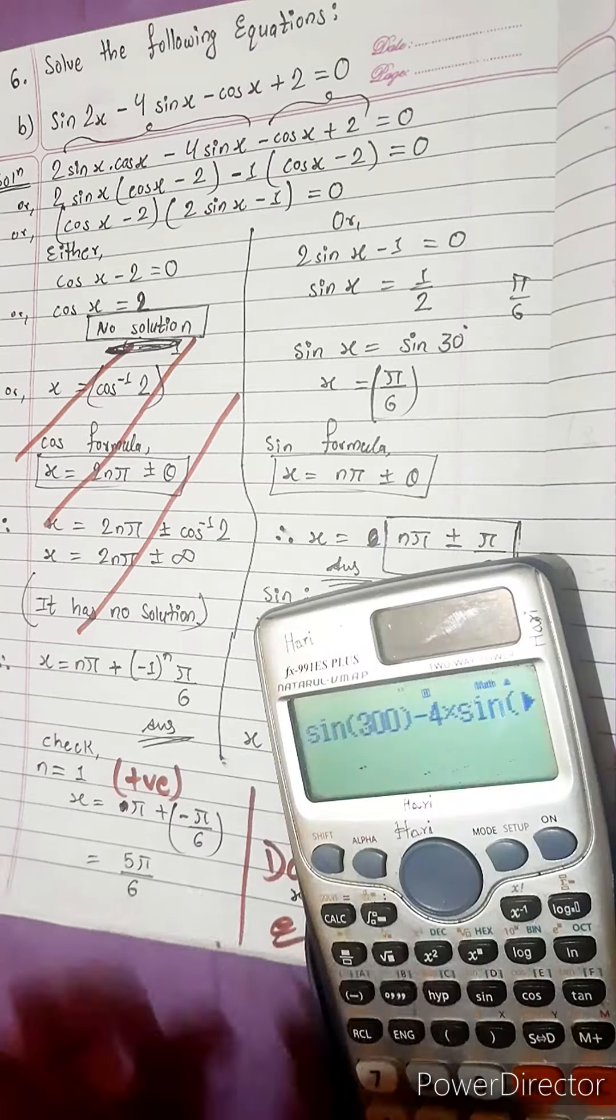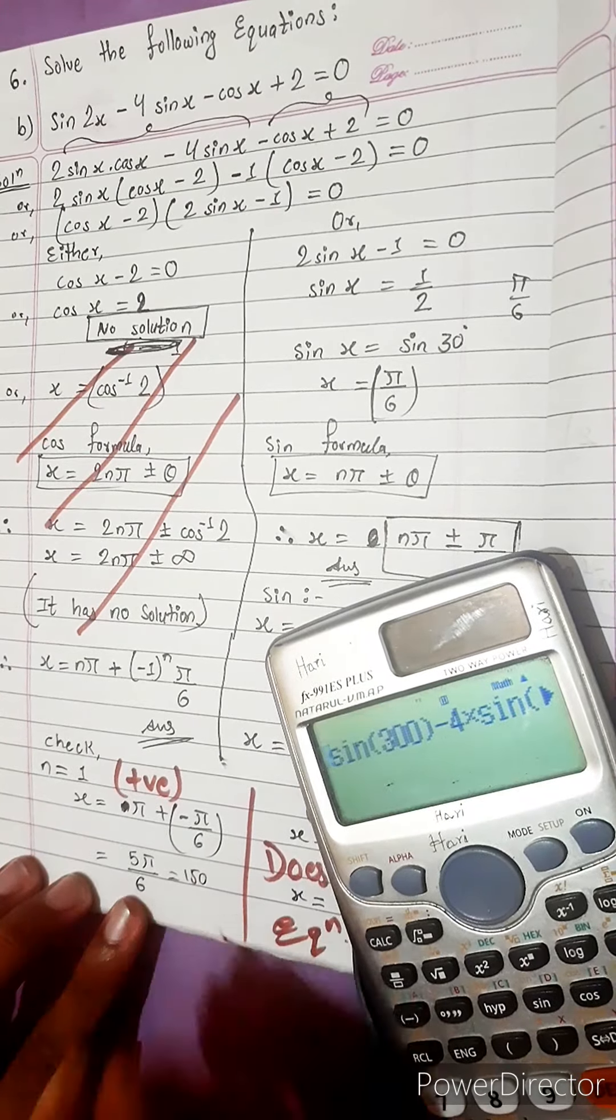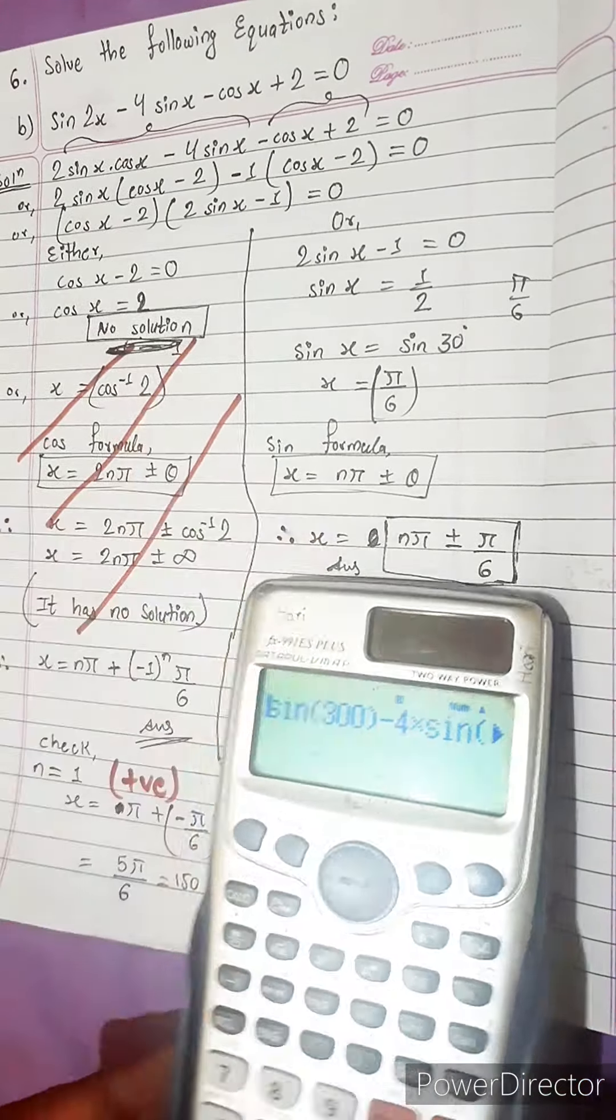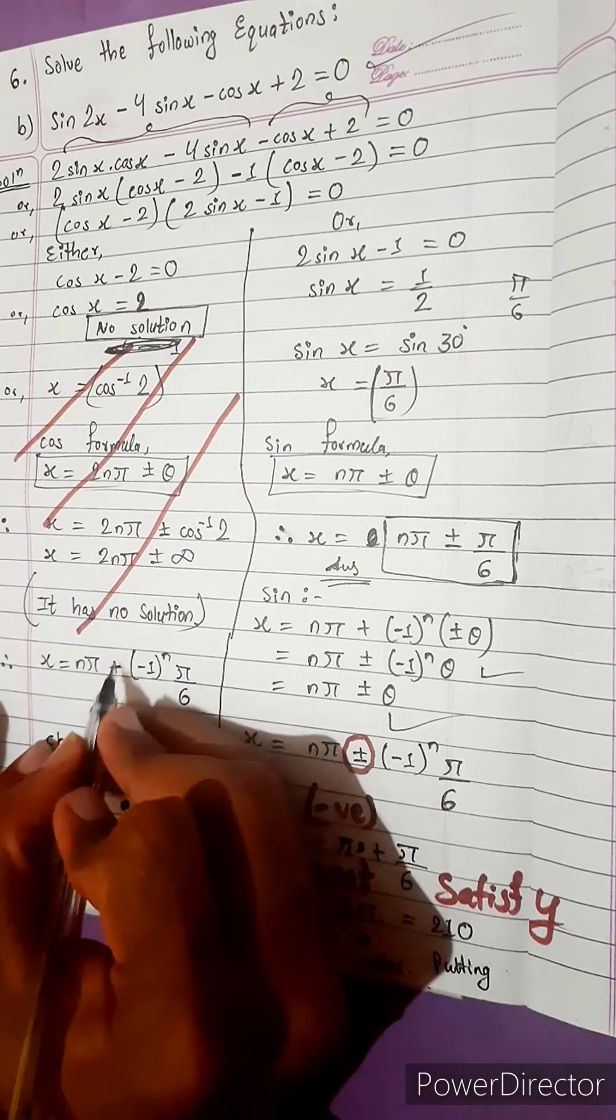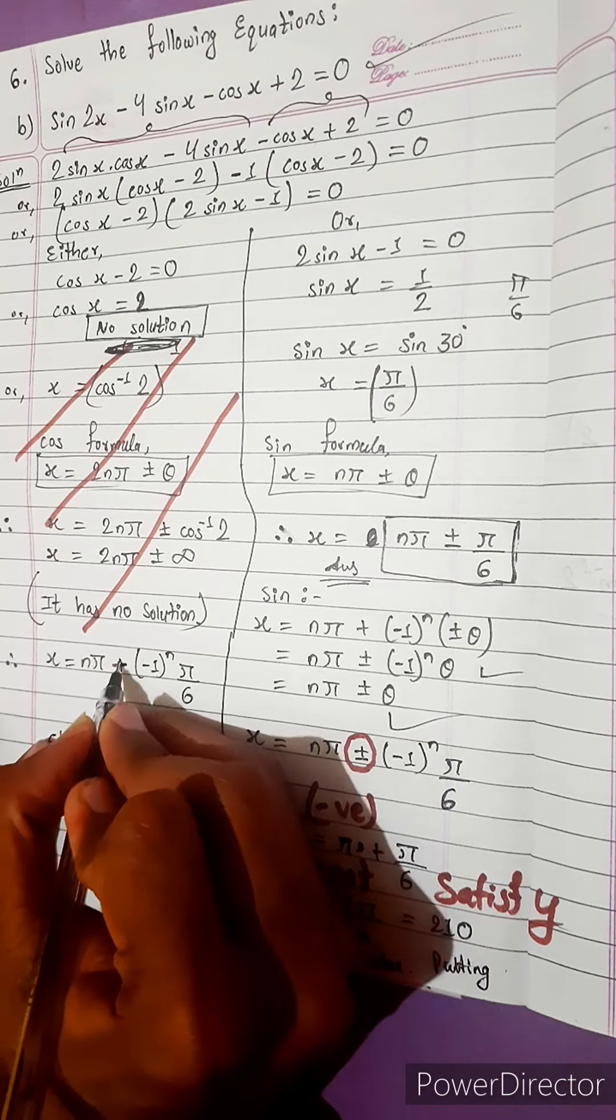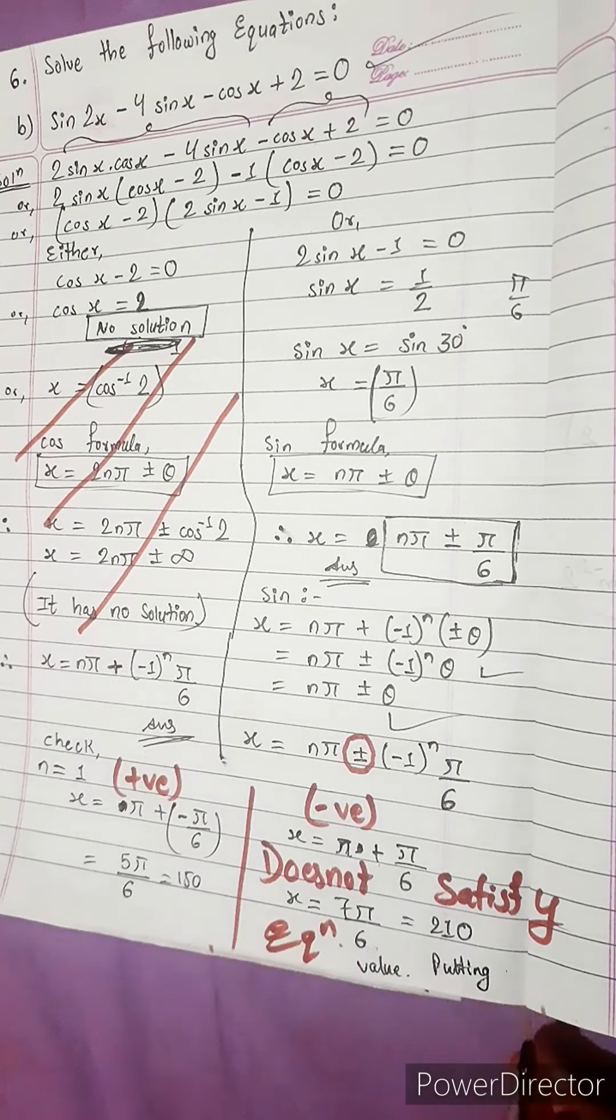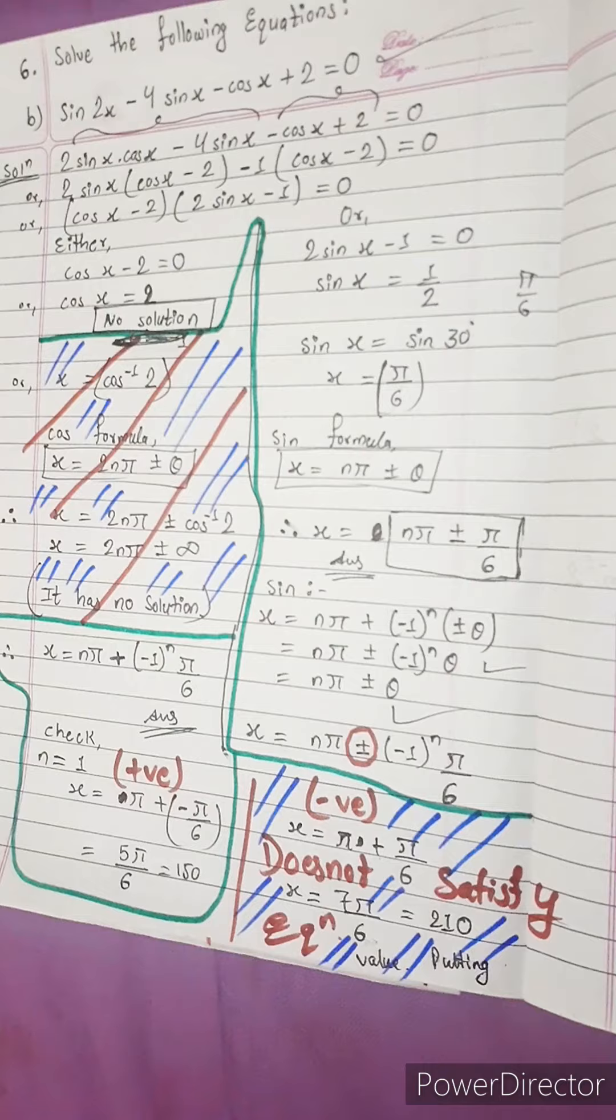And similarly, look here, taking positive value we get 150. And putting value in this equation, we will get exactly 0. So this equation is satisfied by positive value. So we use only plus in formula.